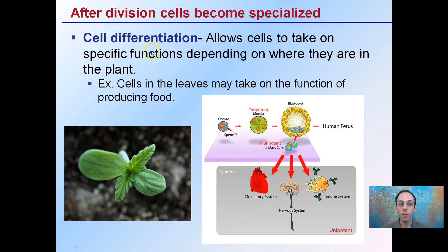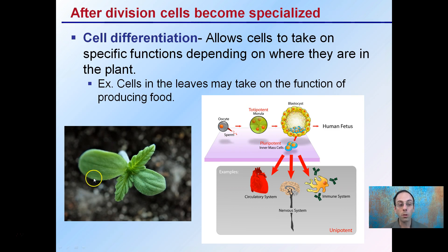Cell differentiation allows cells to take on a very specific function depending on where they're located in the plant. Just as you originate from one cell and cells in different areas took on parts of the circulatory system or nervous system, the same thing happens in plants. For example, cells in leaves may take on the function of producing food, cells in the stems may take on vascular tissue, and cells in the roots may take on the very important task of water and nutrient absorption. This differentiation occurs after division, allowing those cells to become specialized to perform a function.